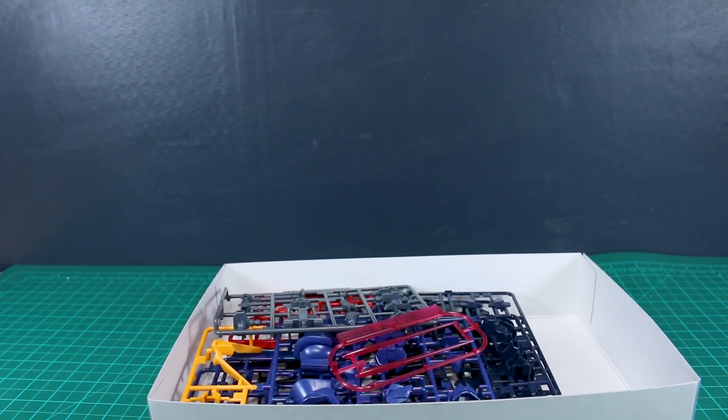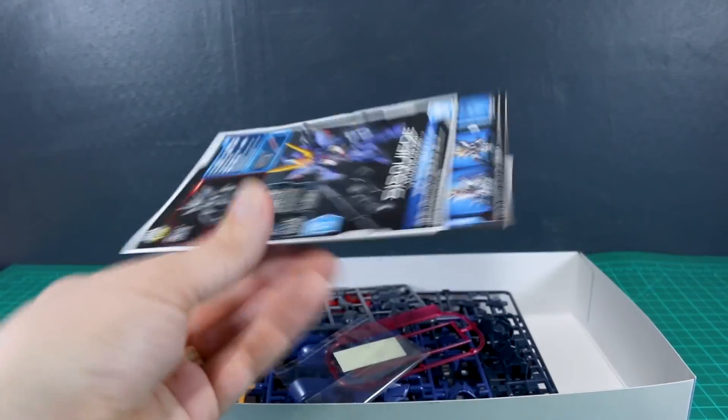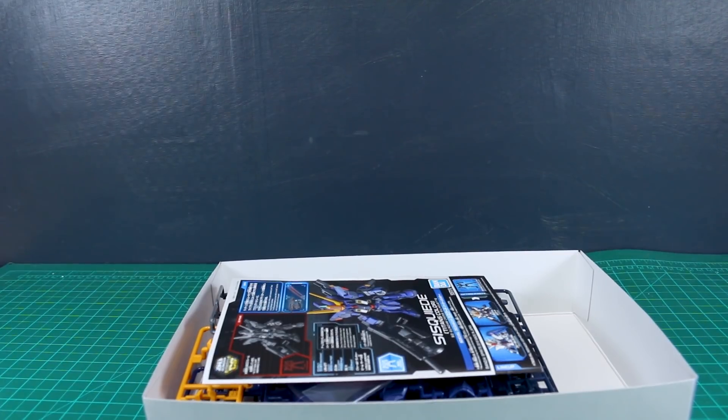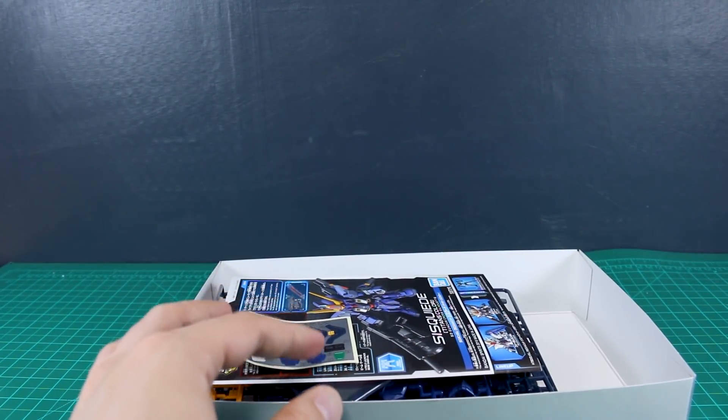So that's going to be it for the unboxing, guys. As you can see, pretty fair amount of parts in there for an SD kit. But like I said, there is a lot kind of involved with it with the backpack parts and then the big gun and everything.